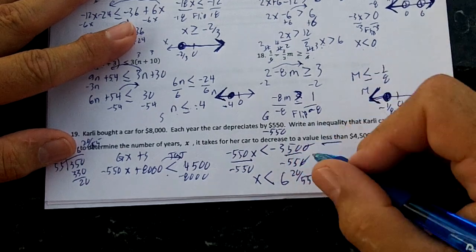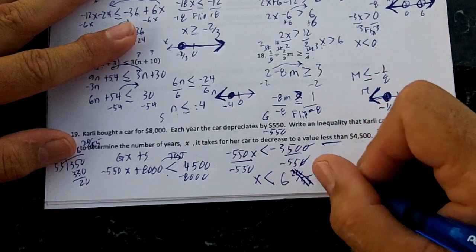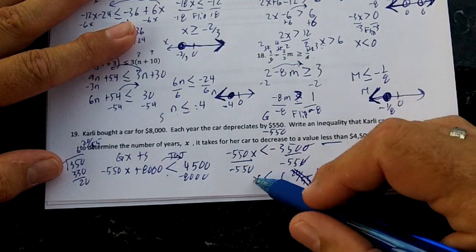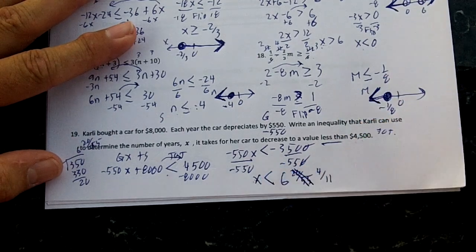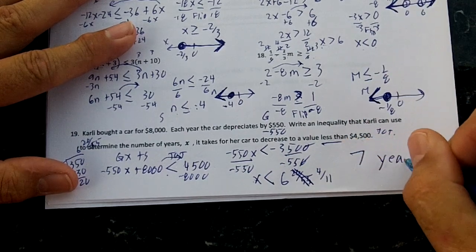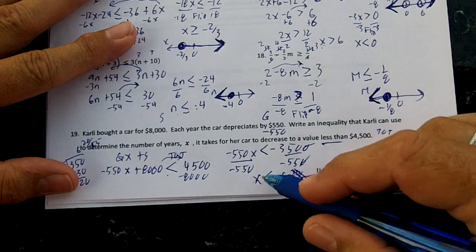And that simplifies to 4 elevenths if you divide by 5. So in six years, it's still going to be over the $4,500. So it's going to take seven years for it to depreciate to be under the $4,500.